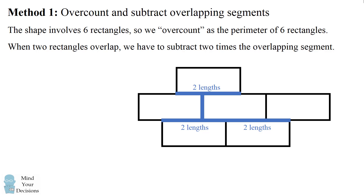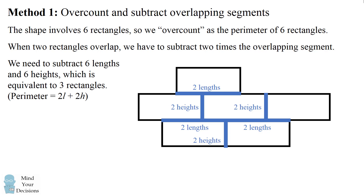In the middle three rectangles, we have an overlapping height. Since this overlaps for two rectangles, we subtract out two heights. We do the same for the other rectangle in the middle, and we do the same for the overlapping height at the bottom. In total, we need to subtract six lengths and six heights, which is equivalent to subtracting out the perimeter of three rectangles, because each rectangle has a perimeter equal to two lengths and two heights.